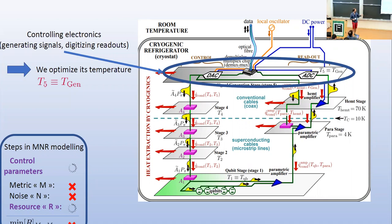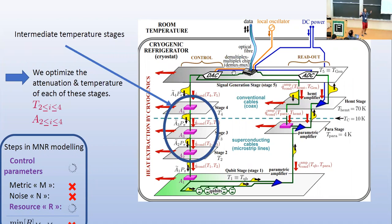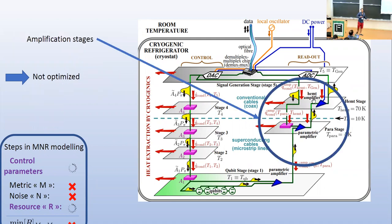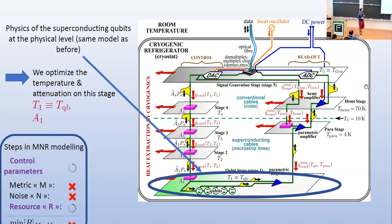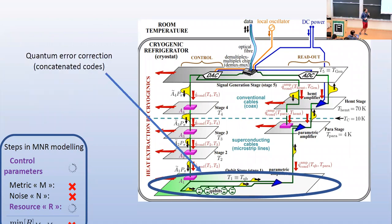Adding more stages to a cryostat generally makes it more energy efficient, and we took typical numbers from experiment. Then you have the stages that drive the qubits: coaxial cables with temperature and attenuation optimized at each stage, amplification stages where we model the level of amplification and heat dissipation, the physics of the superconducting qubits themselves with optimized temperature and attenuation, and finally quantum error correction using concatenated codes.